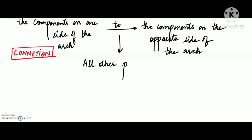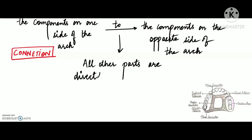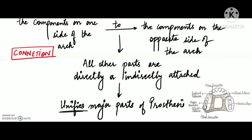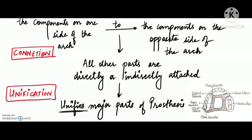The next important function of the major connector is unification — unification of the major parts of the prosthesis. Since the major connector is the unit of the partial denture to which all other parts are directly or indirectly attached, as you can see in this diagram, it is through the major connector that the other components of the partial denture become unified.